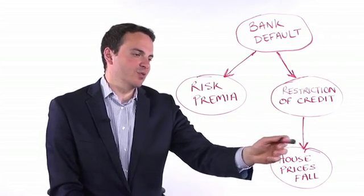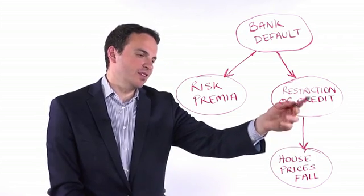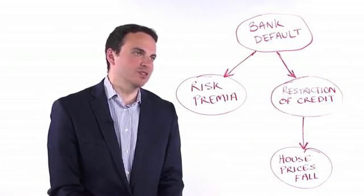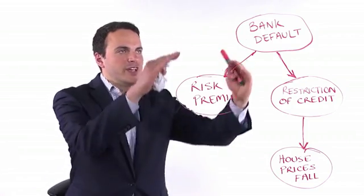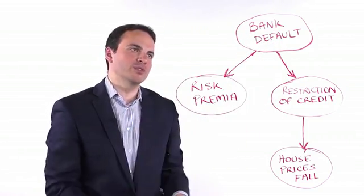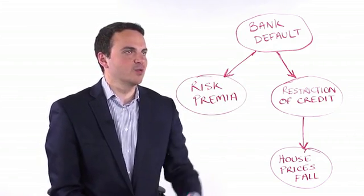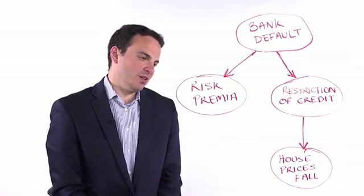Which could have another consequence, which is restriction of credit would cause correction in the housing market, so house prices fall. So you see that this is a scenario which unfolds in a temporal direction, has a certain direction of causality, which is that of the temporal arrow.